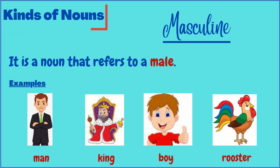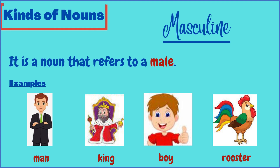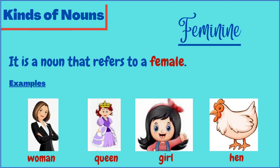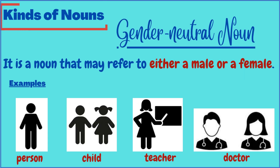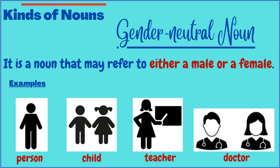Based on gender, a noun has two main kinds: masculine and feminine. We are also going to mention gender-neutral nouns. A masculine noun refers to a male — examples include man, king, boy, and rooster. A feminine noun refers to a female — for example, woman, queen, girl, and hen. A gender-neutral noun is used to refer to either a male or a female; examples are person, child, teacher, and doctor, as these do not specify any particular gender.